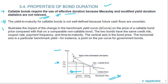For a non-callable bond, we have the normal curve showing convexity — the curve is not straight. Just changing the color to red to be clear: there's the shape of the callable bond. On the downside it's similar, but as we get to the decrease in rates, the shape levels off because that bond can be called.